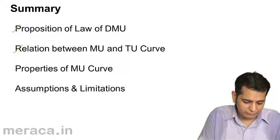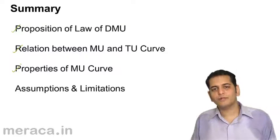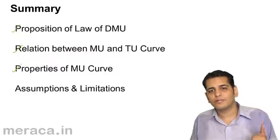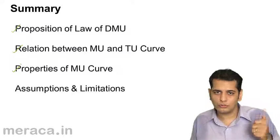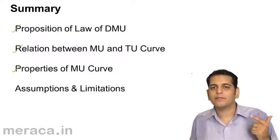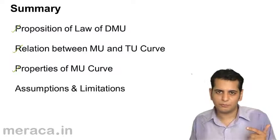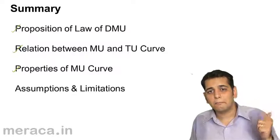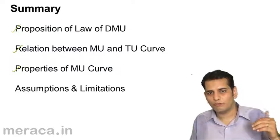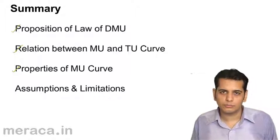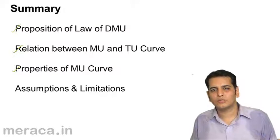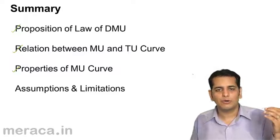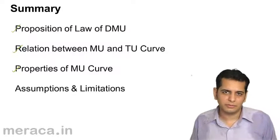Then we've done the properties of the MU curve, which states that the marginal utility always goes on falling. The second property is based on the first property — it says the marginal utility curve always has a downward slope, because the marginal utility always goes on diminishing.